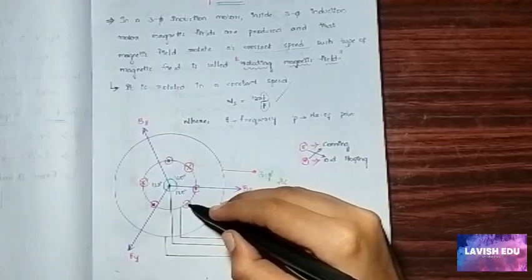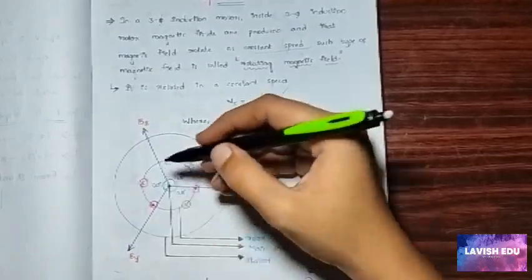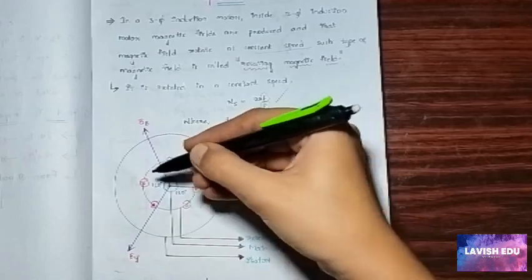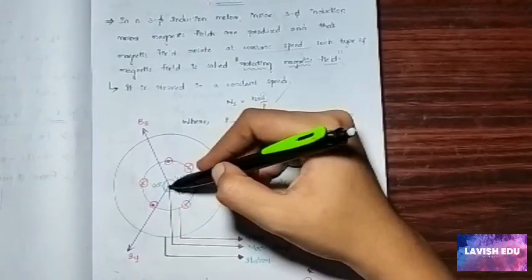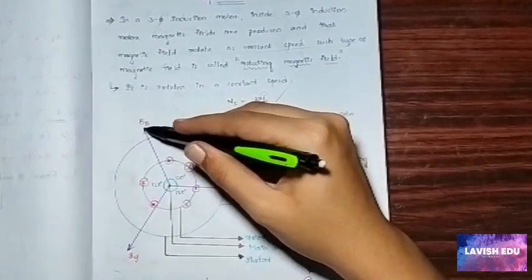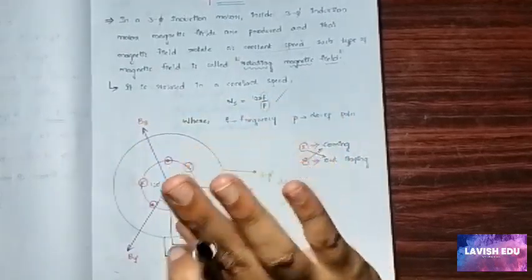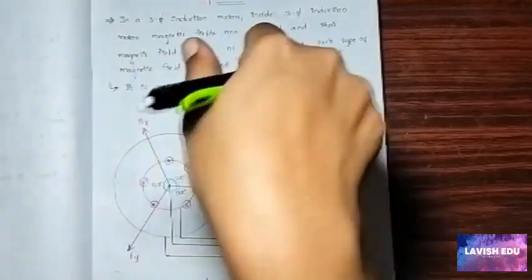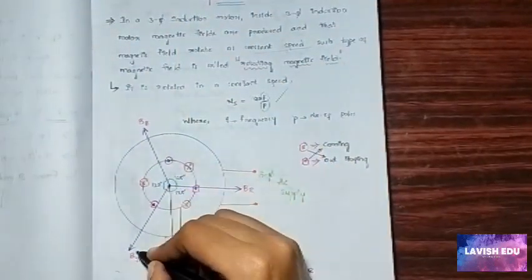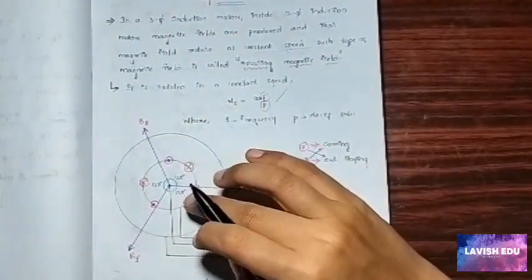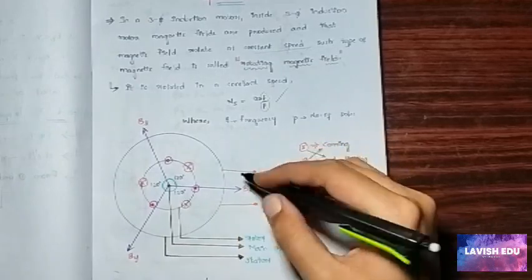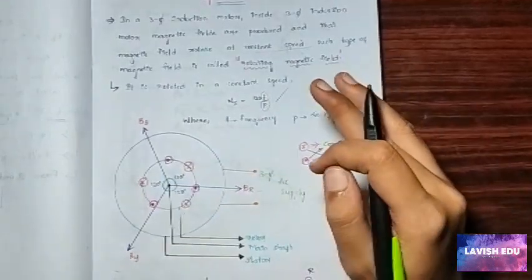In this we can observe that these currents are incoming and outgoing in this form like here it is started and here it is ending. The direction of the flux is in the middle direction, it is incoming in the form like this. The direction will be from the middle like BB and here also it is like this. So we have considered the three main fluxes in this.